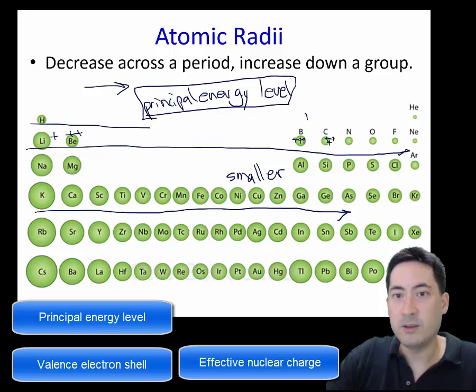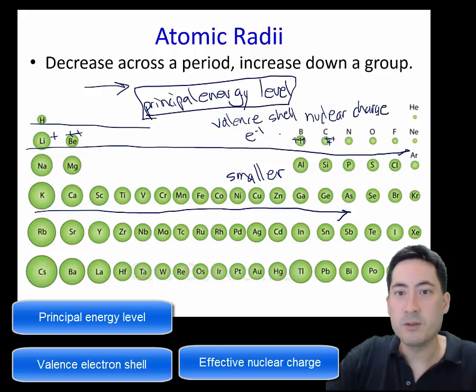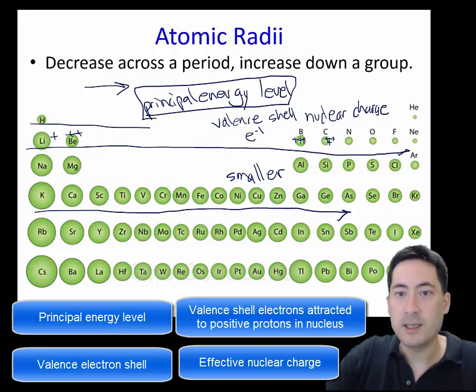So the nucleus is getting more and more positive. So that is called the nuclear charge. And what's happening is the electrons, the valence shell electrons, are getting more and more attracted to the positive protons in the nucleus, and so they're able to pull them closer to the centre, and so they're getting smaller and smaller and smaller.